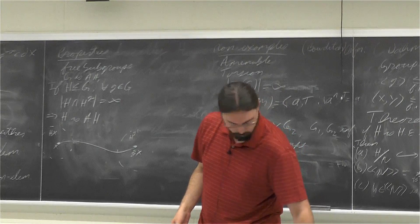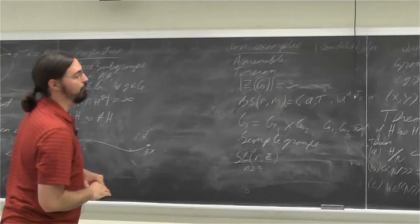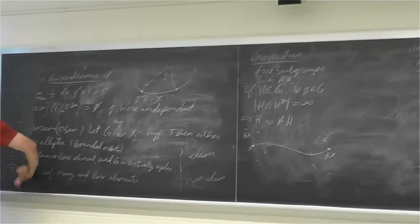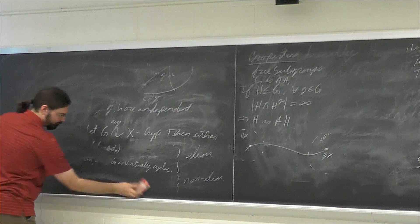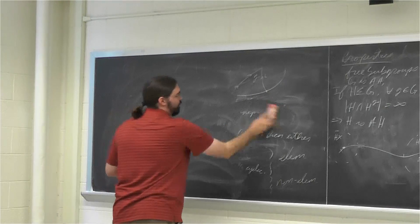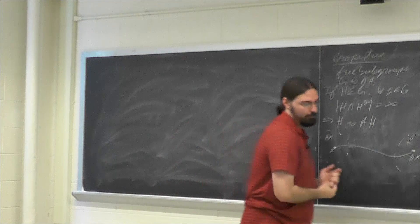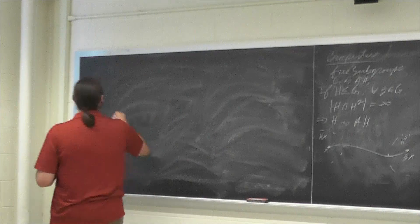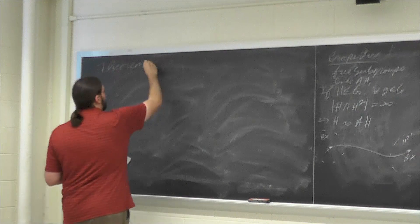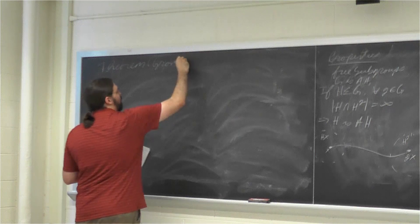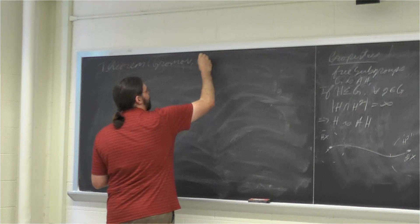Now I want to talk about another version of small cancellation theory — a more combinatorial version, first suggested by Gromov and developed by several people, with the correct statement and proof due to Olshansky. Gromov stated it slightly incorrectly and didn't completely prove it.